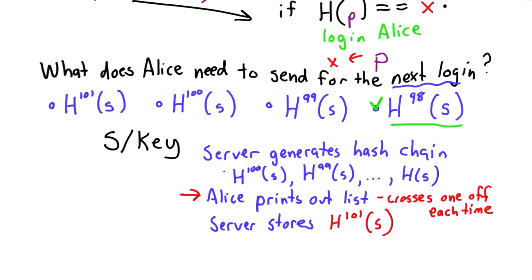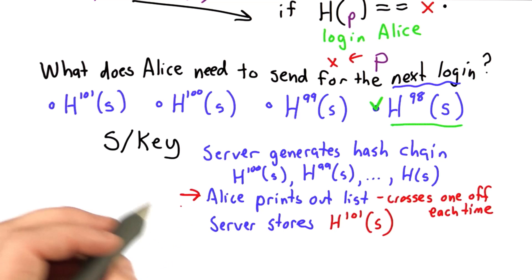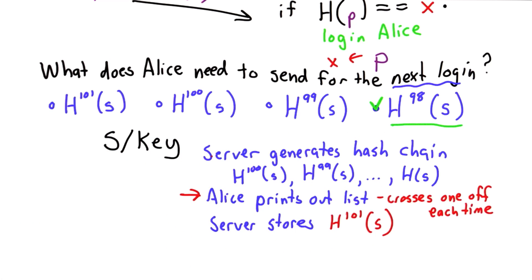This has a pretty big downside that it requires Alice to carry around with her a list of passwords. And instead of remembering something that becomes easier and easier to type, well, she'd have to look at that list, type the password correctly, cross that one off, and use the next one next time. And at some point she's going to run out. She's going to need to get on a secure connection again to generate a new hash chain to be able to keep doing this.